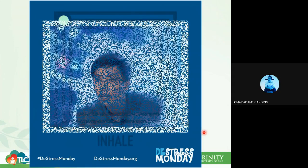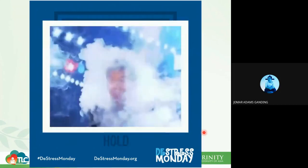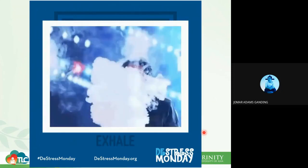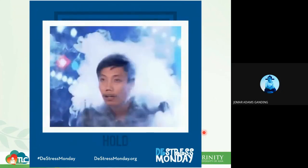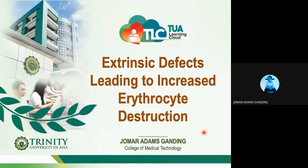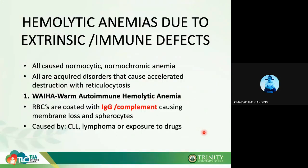Now we will be discussing extrinsic defects leading to increased erythrocyte destruction. All extrinsic factors or immune defects cause normocytic normochromic anemia — the RBC itself is normal. All are acquired disorders that cause accelerated destruction with reticulocytosis.